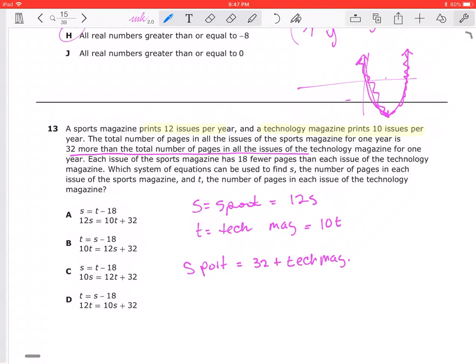Okay, so we would write our equation. We can do this a couple of ways. If we look at our answer choices, we have A, which is S equals T minus 18, then we have 12S equals 10T plus 32. Then we have 10S equals 12T.